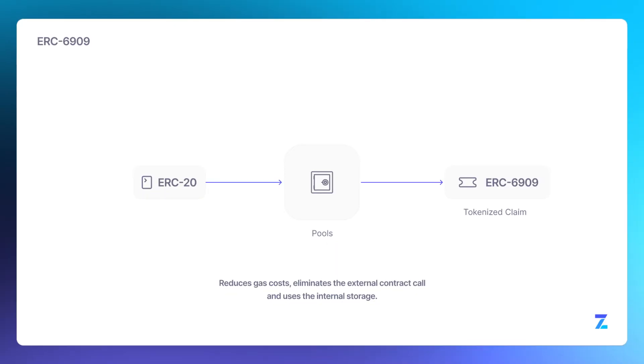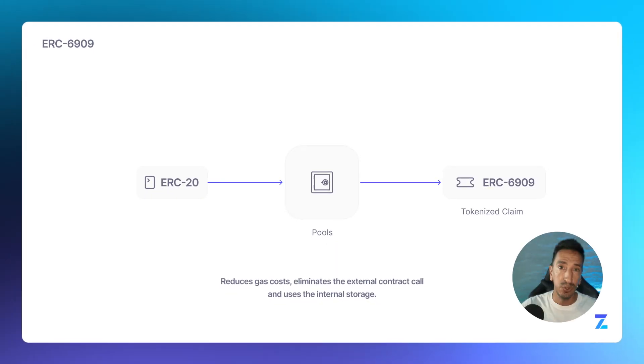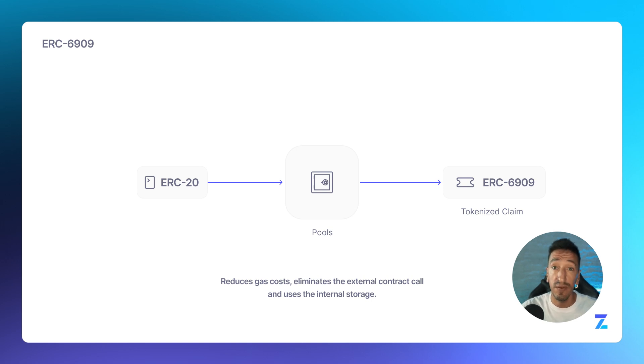Uniswap v4 also uses the ERC-6909 standard, handling multiple tokens in one single contract. How it works? After completing an operation that involves an ERC-20 token, you can choose to leave your tokens in the pool and an ERC-6909 token will be minted representing that claim.